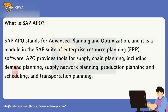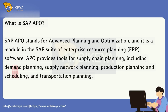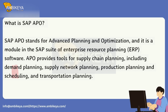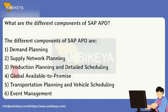What is SAP APO? SAP APO stands for Advanced Planning and Optimization, and it is a module in the SAP Suite of Enterprise Resource Planning (ERP) software. APO provides tools for supply chain planning, including demand planning, supply network planning, production planning and scheduling, and transportation planning.